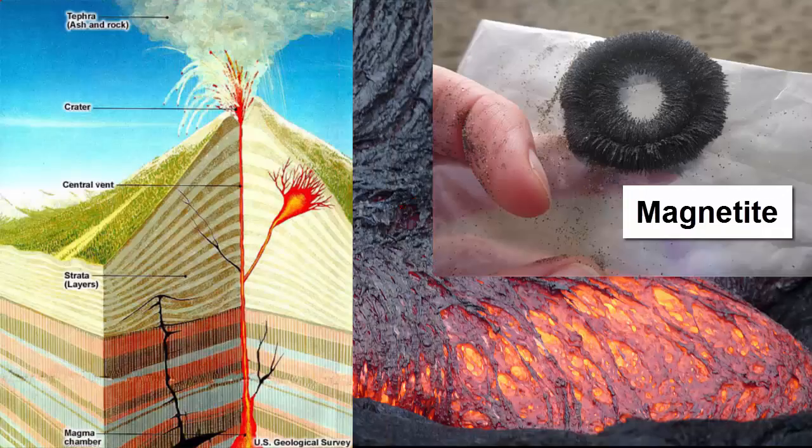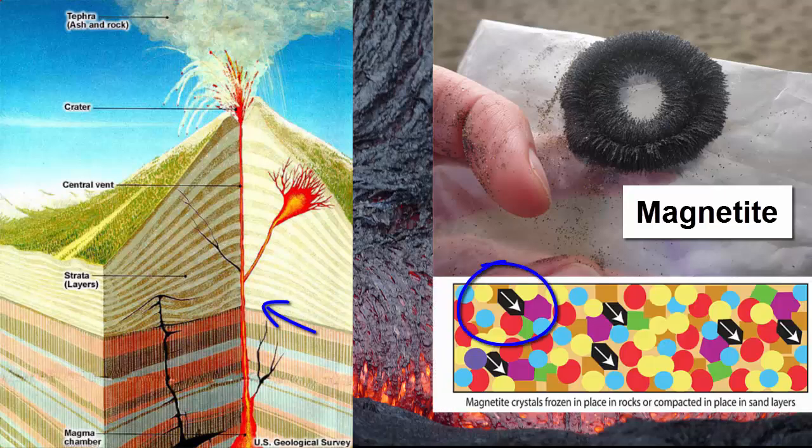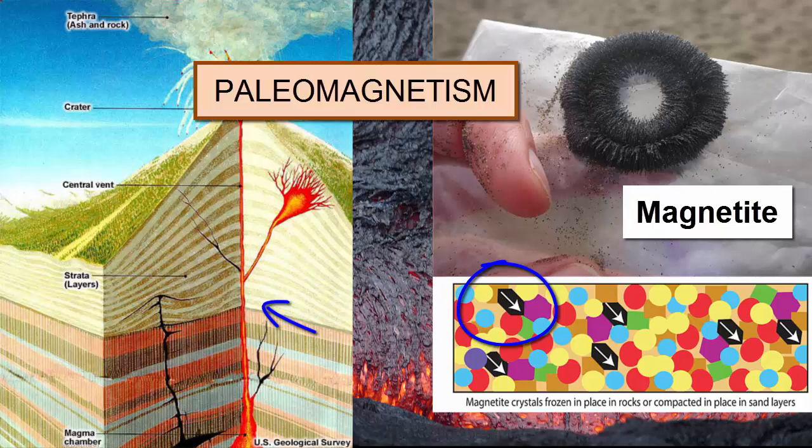So we can go to the piles of lavas that make up volcanoes, and starting at the oldest on the bottom, take samples, date them so we know how old they are, and then measure the direction of their magnetite crystals to see what direction the magnetic field was when they formed. We call that ancient or fossil evidence of Earth's past magnetic field paleomagnetism.